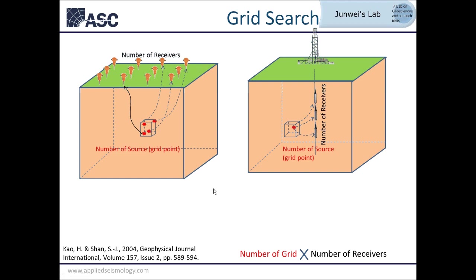In practice, there are a few challenges. The first challenge comes from the travel time calculation. As the model gets more complicated, ray tracing can be very time-consuming and sometimes problematic. The other challenge is non-uniqueness. Due to limited aperture — for example, in a borehole case — there are multiple grid points that can match the travel time equally well, so you don't know which grid point to choose as the microseismicity location.